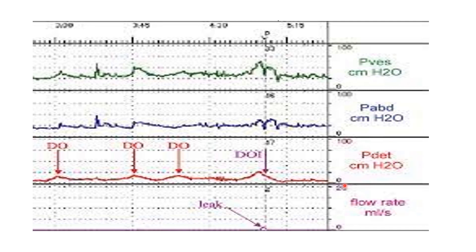This is a very important exam point. In stress incontinence, the graph shows leakage with rise in abdominal pressure but no detrusor pressure rise. In urge incontinence, the graph shows detrusor overactivity with leakage. The difference between urge incontinence and detrusor overactivity alone is: in detrusor overactivity only — without urge incontinence — the detrusor pressure rises but there will be no leaking.